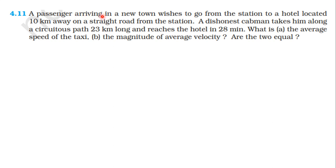A passenger arriving in a new town wishes to go from the station to a hotel located 10 km away on a straight road from the station. A dishonest cabman takes him a long circuitous path 23 km long and reaches the hotel in 28 minutes. What is first, the average speed of the taxi? Second, the magnitude of the average velocity — are the two equal?